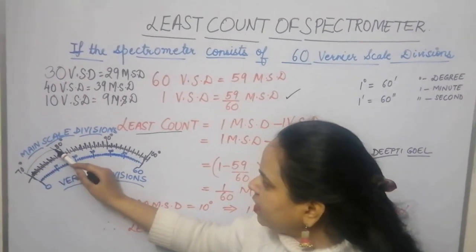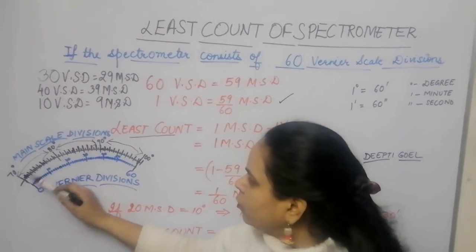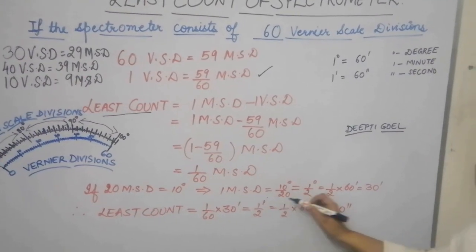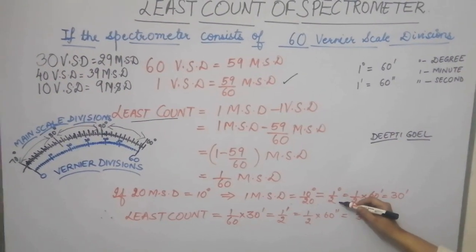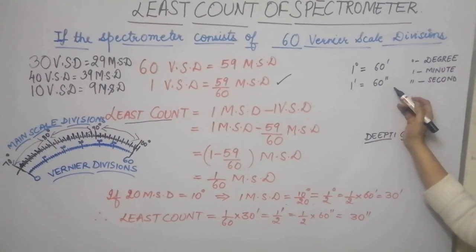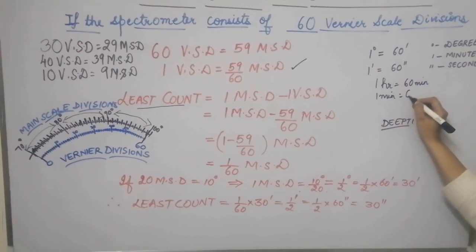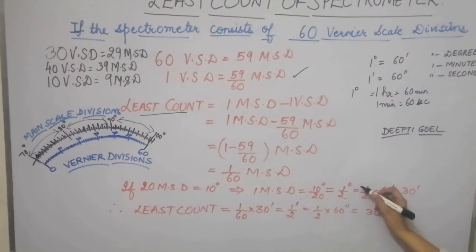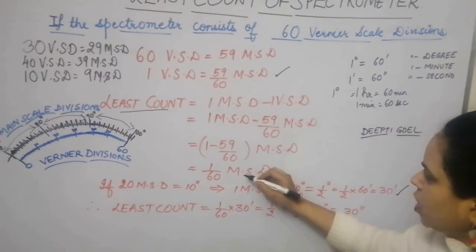On the main scale, between any 10 degrees there are 20 divisions. So 20 main scale divisions equal 10 degrees, meaning 1 main scale division equals 10/20 = half a degree. Since 1 degree equals 60 minutes, half a degree equals 30 minutes. In the angular scale, degrees replace hours, so half a degree is equivalent to 30 minutes.